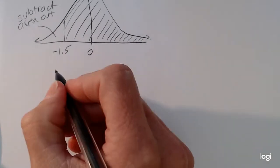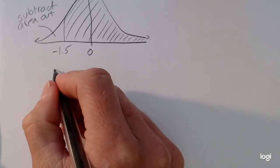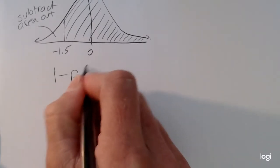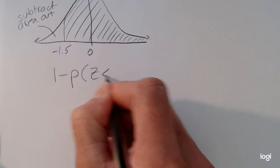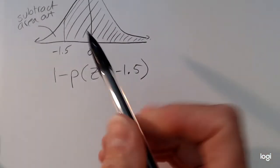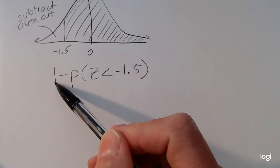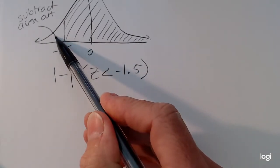So in notation, this upper area will be equal to 1 minus the probability z is less than negative 1.5. So again, I'm taking the whole thing, which is 1, and subtracting out the piece I don't want.